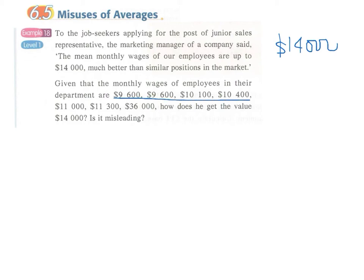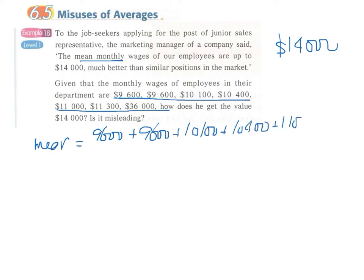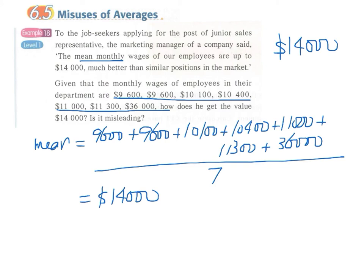These are the actual wages. So how does he get that value? As stated by the problem, this is the mean. We can check this out by adding all these numbers and then dividing by 7. Using our calculator, we find the value $14,000.